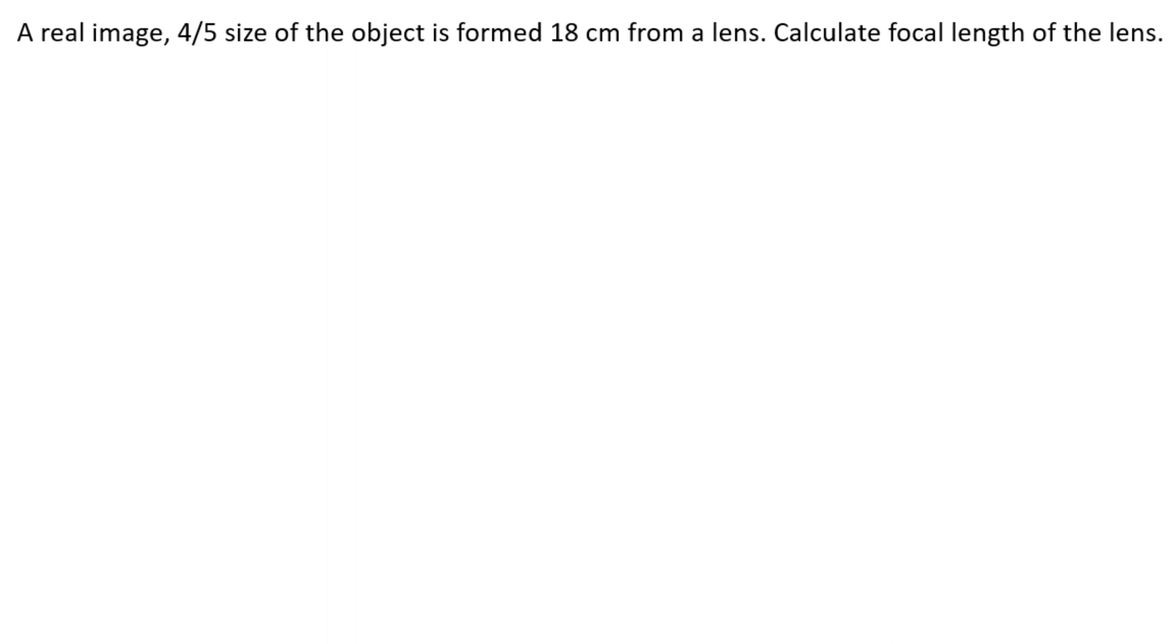Hi friends, today we are going to learn about a light chapter problem. This is a very important problem. A real image, if real image comes, means 4/5 size of the object is formed 18 centimeters from a lens. 18 centimeter from a lens, this 18 centimeter is this side.